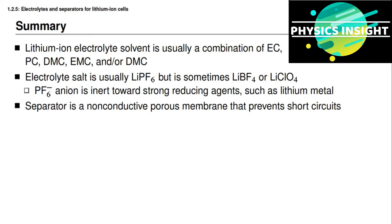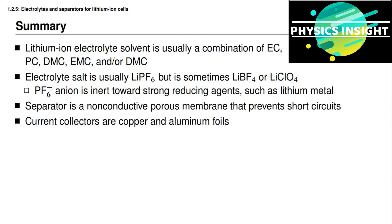The separator in a lithium-ion battery cell is a non-conductive porous membrane that mechanically and physically separates both electrodes to prevent short circuits. It must have small pores that allow the electrolyte to permeate through and allow the cations and anions in the electrolyte to move back and forth so that normal operation of the battery cell can happen. Finally, the current collectors are made from very thin copper and aluminum foils.